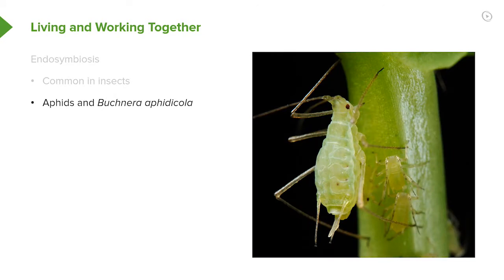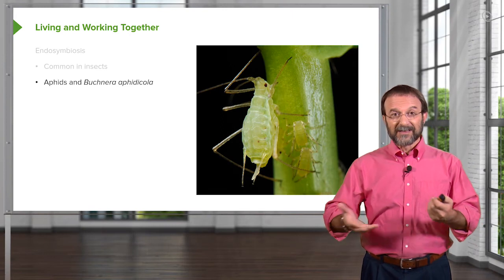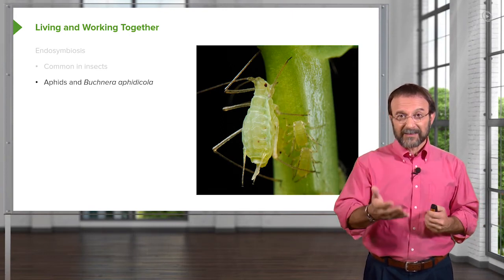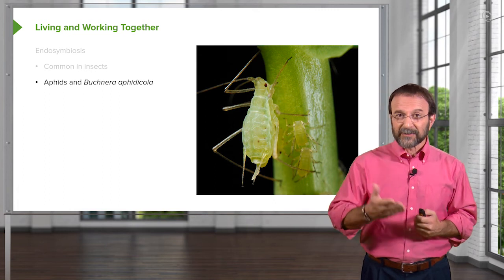I'll give you an example of an endosymbiosis. This takes place in the aphid, a common insect that lives off of plants. The aphid drinks the sap of plants in order to live, and that's all that the aphid drinks. However, sap is made largely of sugars, and animals cannot live on sugars alone. Within the aphid, and in fact within the cells of the aphid, is a bacteria called Buchnera aphidicola. That bacteria takes the sugars that the aphid eats and converts them to other compounds like amino acids so the aphid can grow. So the bacteria gets a place to live and gets sugars, and in turn the aphid gets to grow.